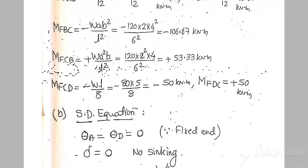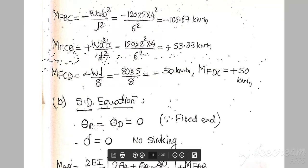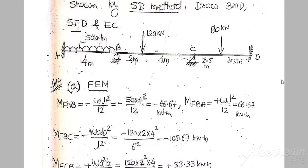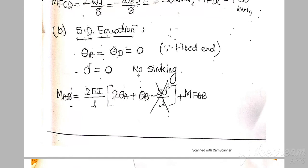Next step is the slope deflection equation. We already discussed that theta A and theta D are equal to zero. According to the support conditions, theta A is a fixed support and theta D is also zero. Remember this.